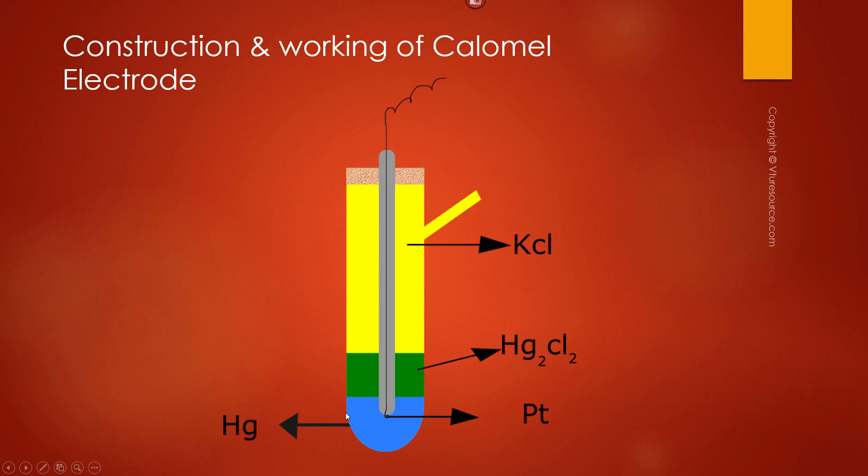At the bottom of the glass tube, mercury is placed. Above that, a paste of mercury and mercury chloride is placed. Mercury chloride is also known as calomel, which is the commercial name for mercury chloride.